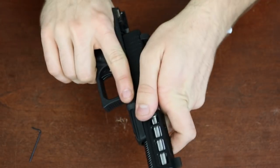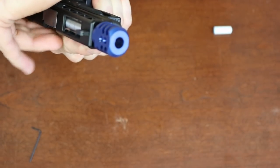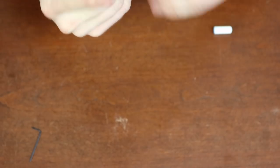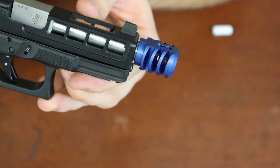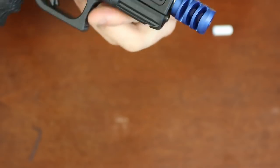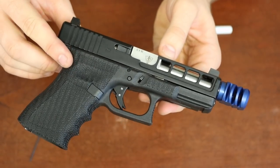I'm just going to take it, install it, ensure function, just make sure we're not hitting. We look good. So that is how you install. It's really quick and easy. Just make sure you use blue Loctite. Make sure you get your timing down.